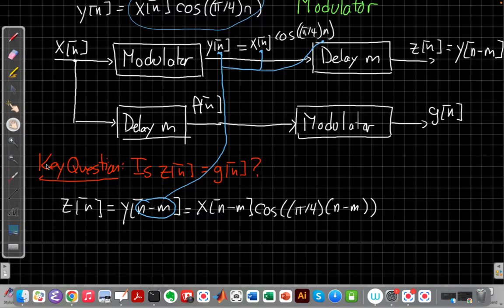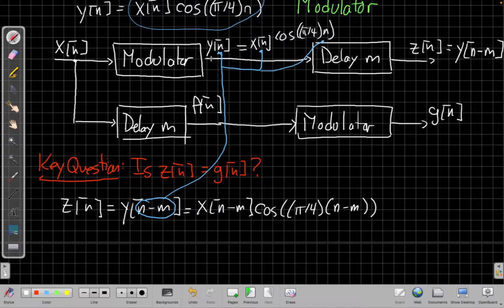So if I look at the other branch again working my way backwards I'd say well first of all I have this modulator box works the same. It says the output, although the output is now g[n], it's still the input times cosine pi over 4n, right?